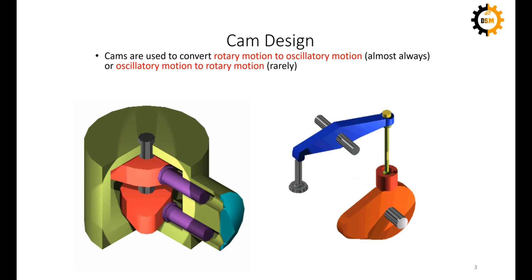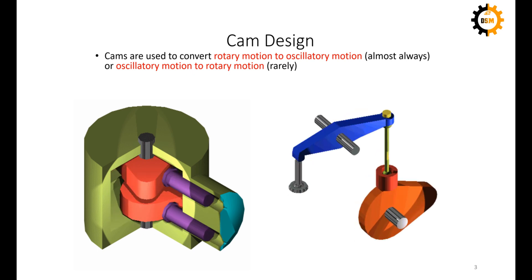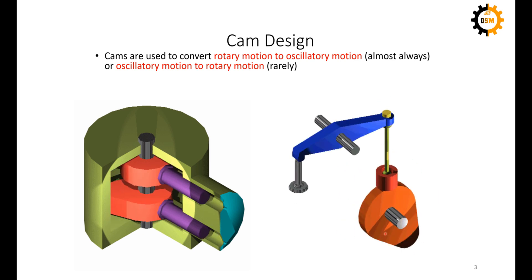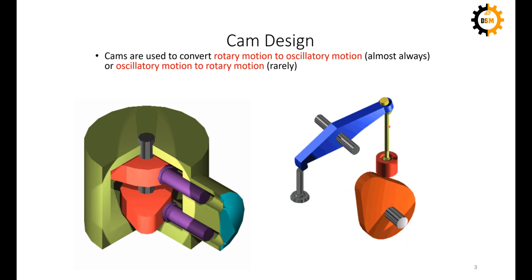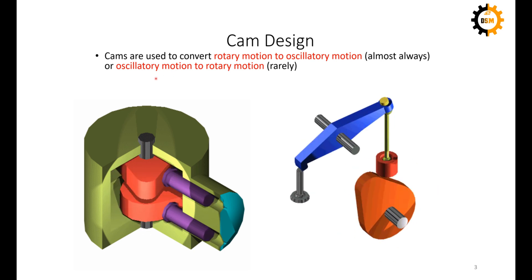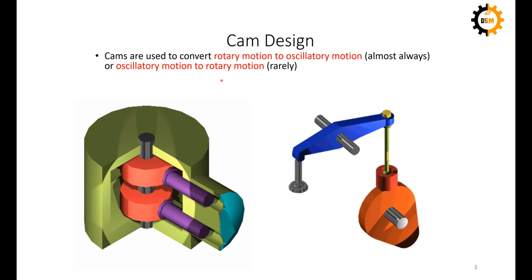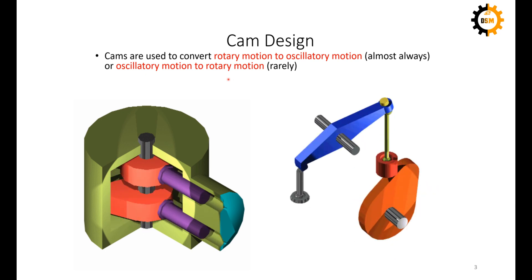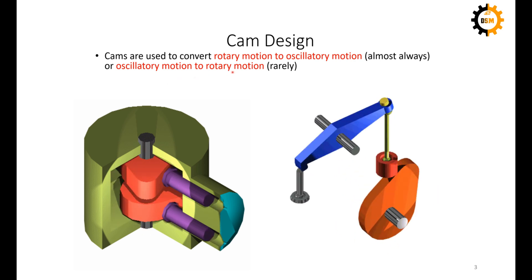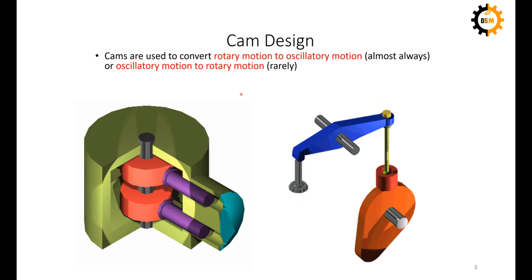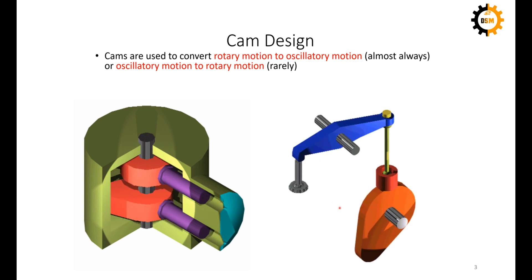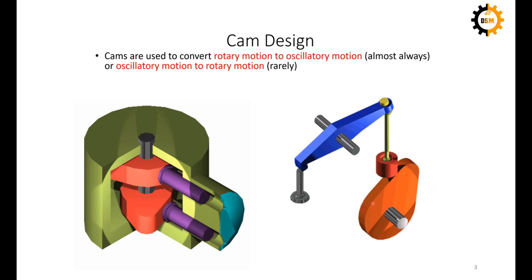Cams are used to convert rotary motion to oscillatory motion. If something is rotating, you can take that rotational motion to have some oscillation out of it. There are also few cases when oscillatory motion is being converted into rotary motion, but most of the time the cam follower mechanism converts rotational motion to oscillatory motion.